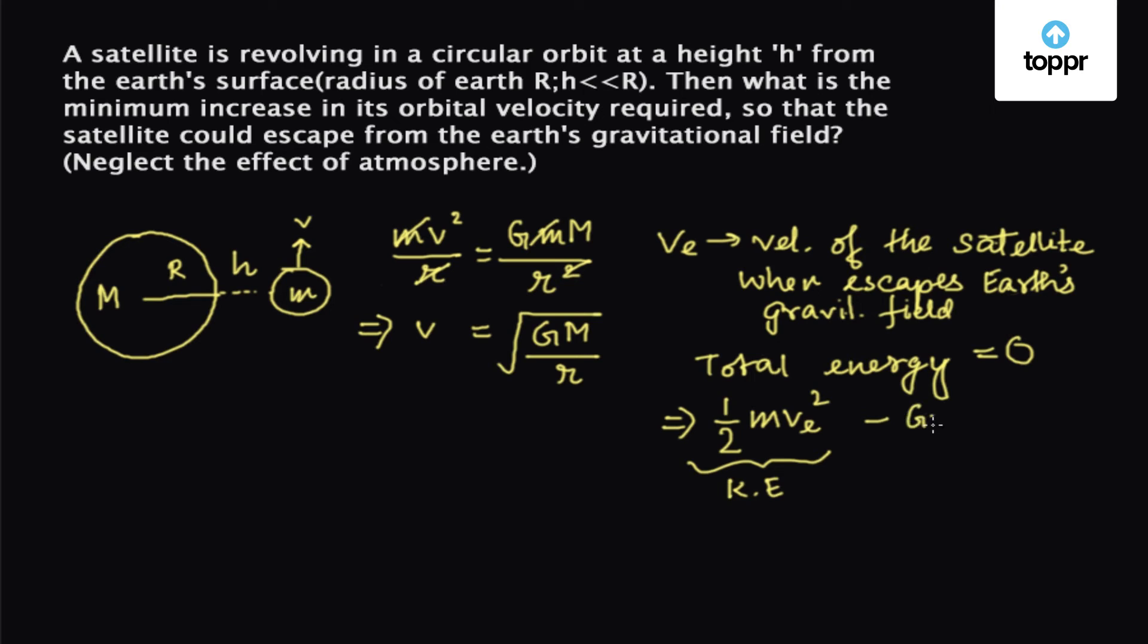minus GMm upon r equals 0, and this is the potential energy of the satellite, which implies ve equals root over 2GM upon r.